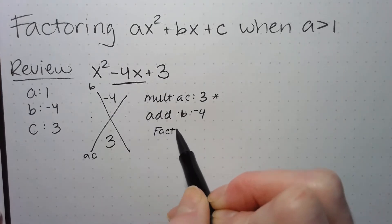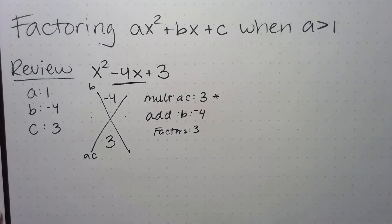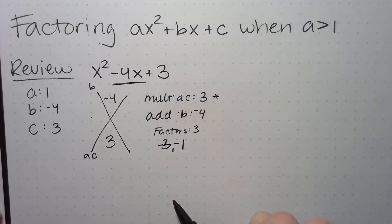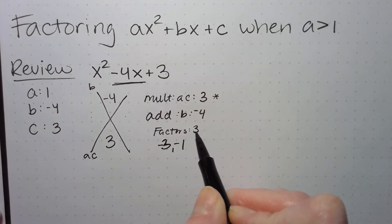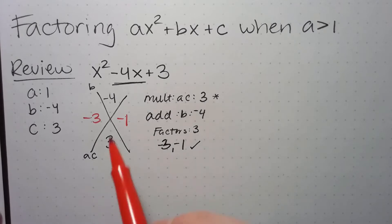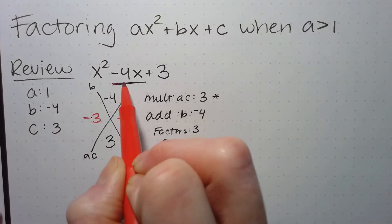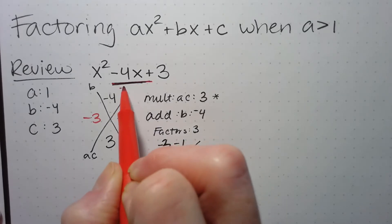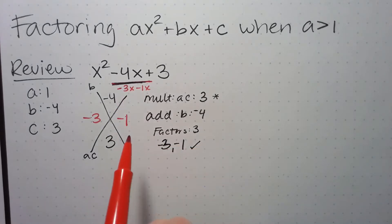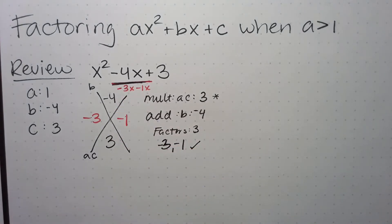Since b is negative 4, I need the factors of 3 that add up to negative 4. Since they have to add to a negative, I need negatives. They multiply to a positive, so negative 3 and negative 1 multiply to make positive 3 and add to make negative 4. That took minus 4x and broke it down into negative 3x minus 1x.